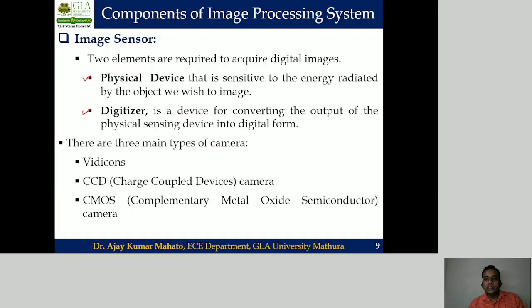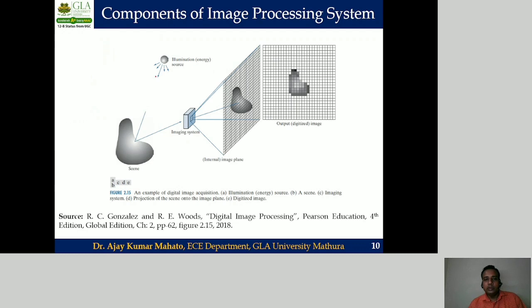The physical device is sensitive to the radiated energy emitted by the object, and the digitizer converts the output of the physical device into digital form. To understand the working principle of an image sensor, consider this example: a light illuminating source shines on the target object. Some portion of the light is reflected by the object, this reflected light is sensed by the imaging sensor, which projects the light onto a two-dimensional plane, resulting in the digital image output.